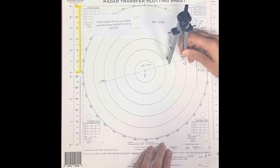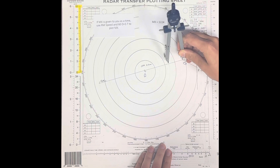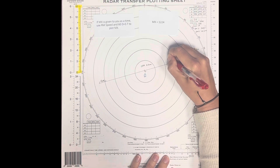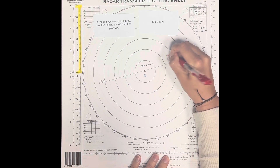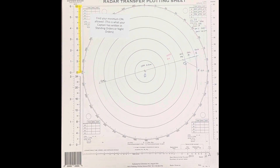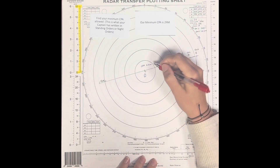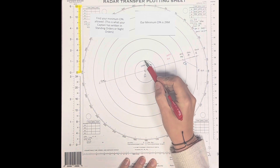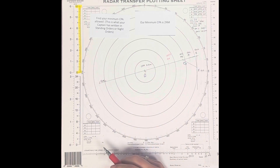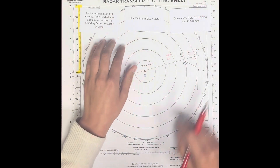Another way to do quick math is that the same distance from R to M with 12 minutes will be the same from M to MX with the same time interval of 12 minutes. So we've plotted MX. Now you want to find your minimum CPA allowed — this is normally what your captain has written in standing orders or night orders. Our imaginary captain has given us a minimum CPA of two nautical miles, which is that first range ring on your radar transfer plotting sheet with a 12 nautical mile range scale.